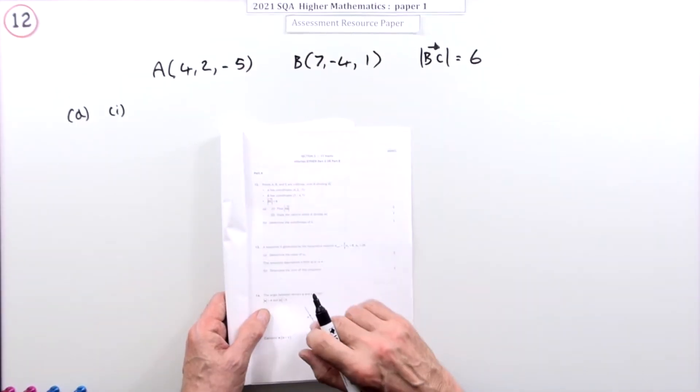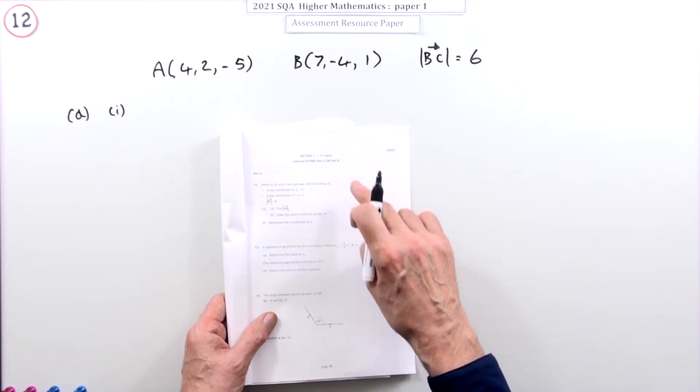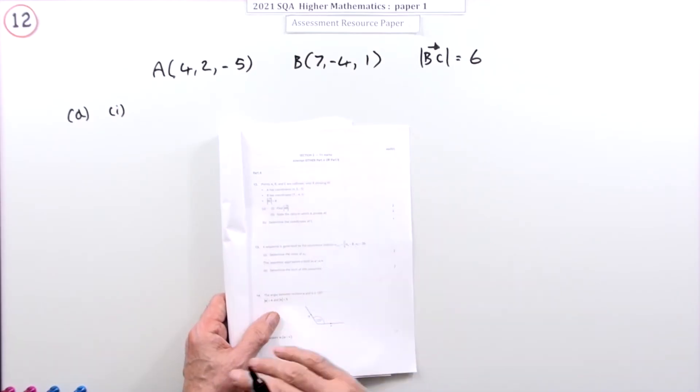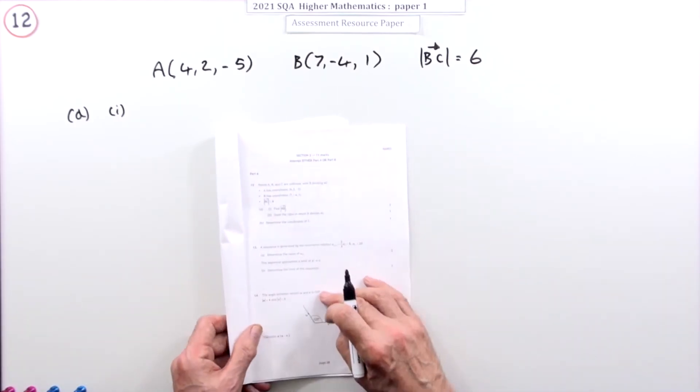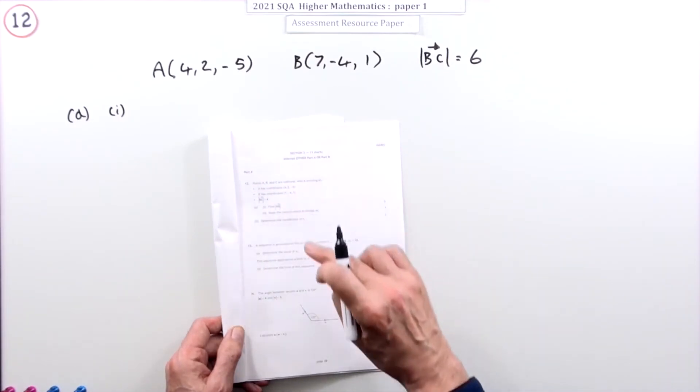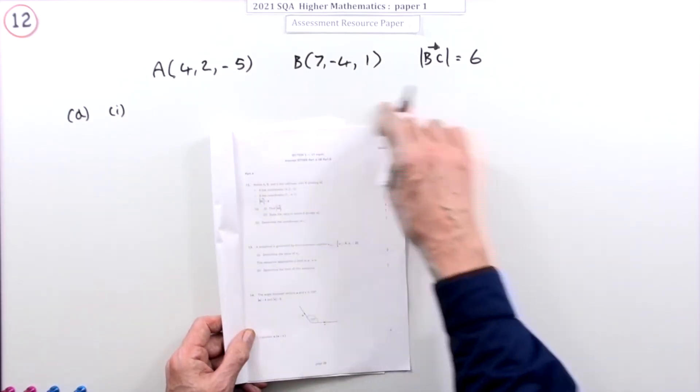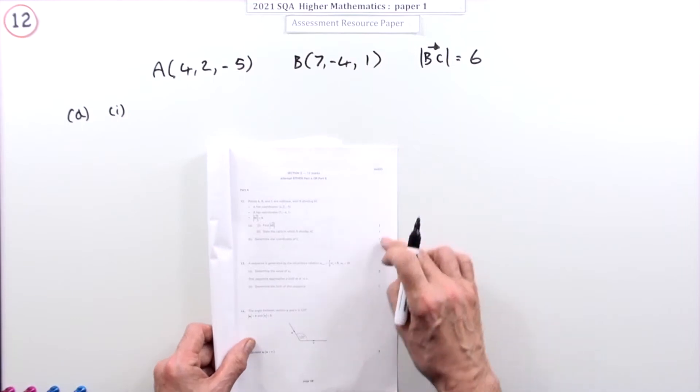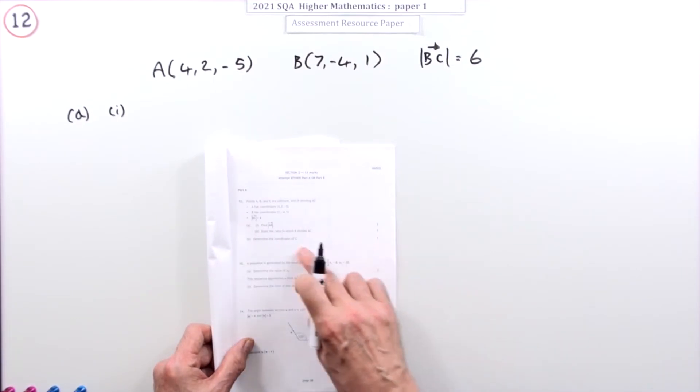So number 12 then from paper one of the 2021 higher maths resource paper. This is where it splits into a part A or a part B depending on which topics were covered because of restrictions. Part A is the one with the vectors and the recurrence relations.